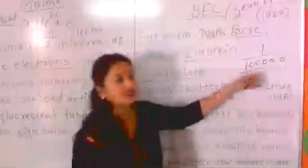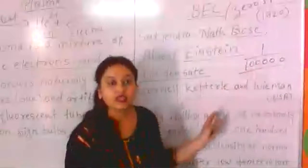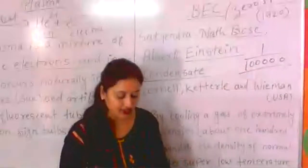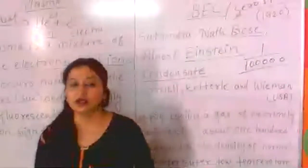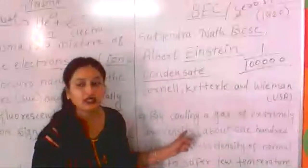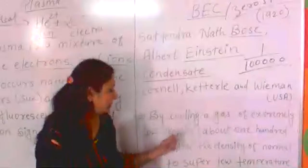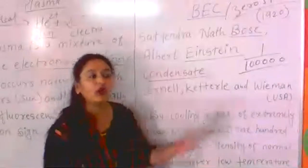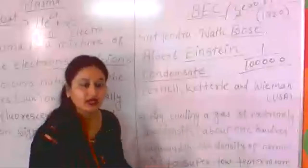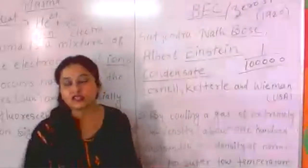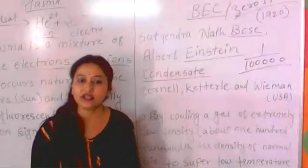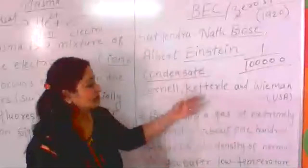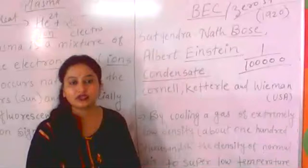With a gas at extremely low density, if we cool it, normally it would undergo condensation and become liquid. But when a gas at extremely low density is cooled to a very, very low temperature — super low temperature — it does not simply become liquid. Instead it forms a new state of matter beyond solid, liquid, gas, and plasma. That new state is BEC.